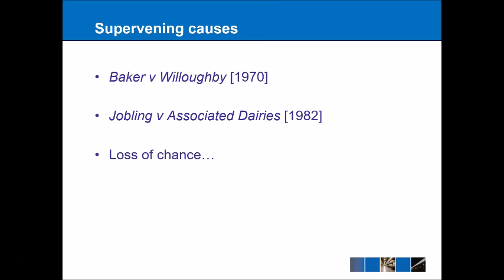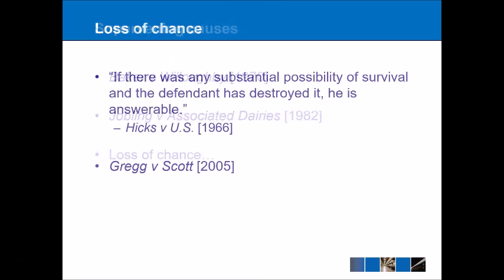This leads to loss of chance, defined in the US case of Hicks v United States 1966: if there was any substantial possibility of survival and the defendant destroyed it, he is answerable. Applying this to Jobling, if there was a 70 percent chance of survival destroyed by the defendant, they would be liable to pay 70 percent of compensation. However, it must be over 50 percent on the balance of probabilities to establish the chain of causation.